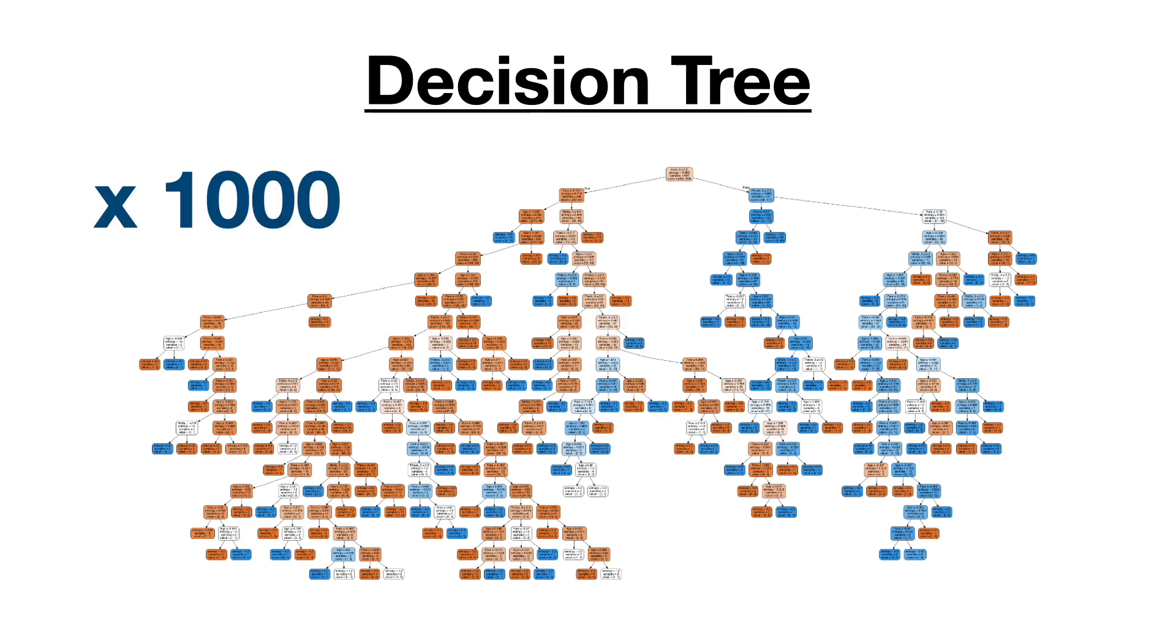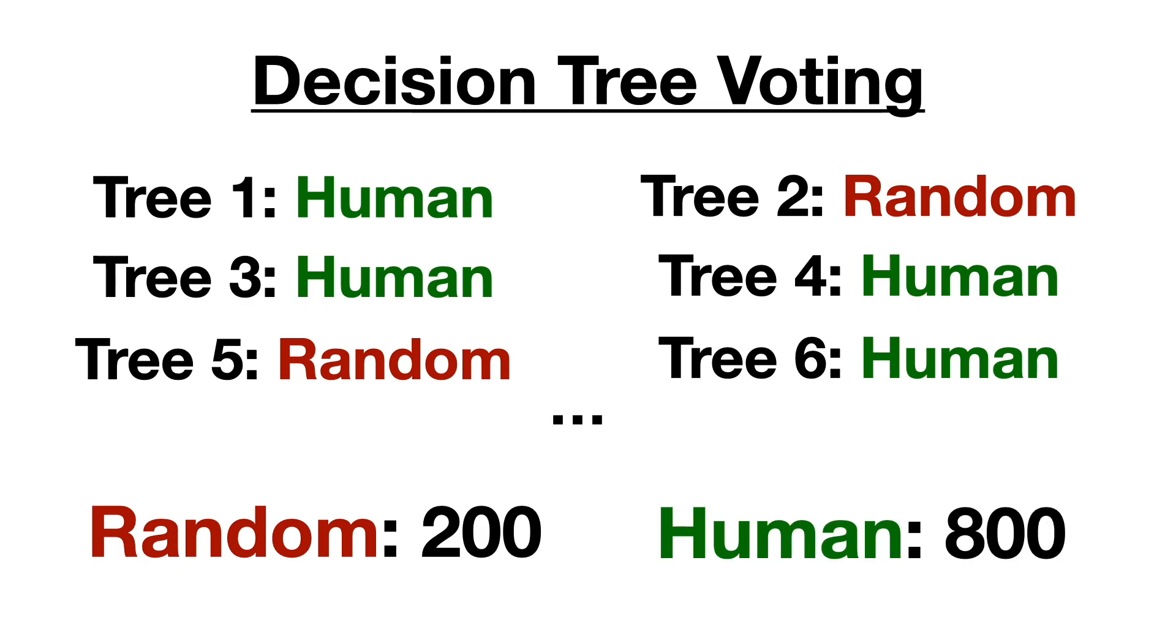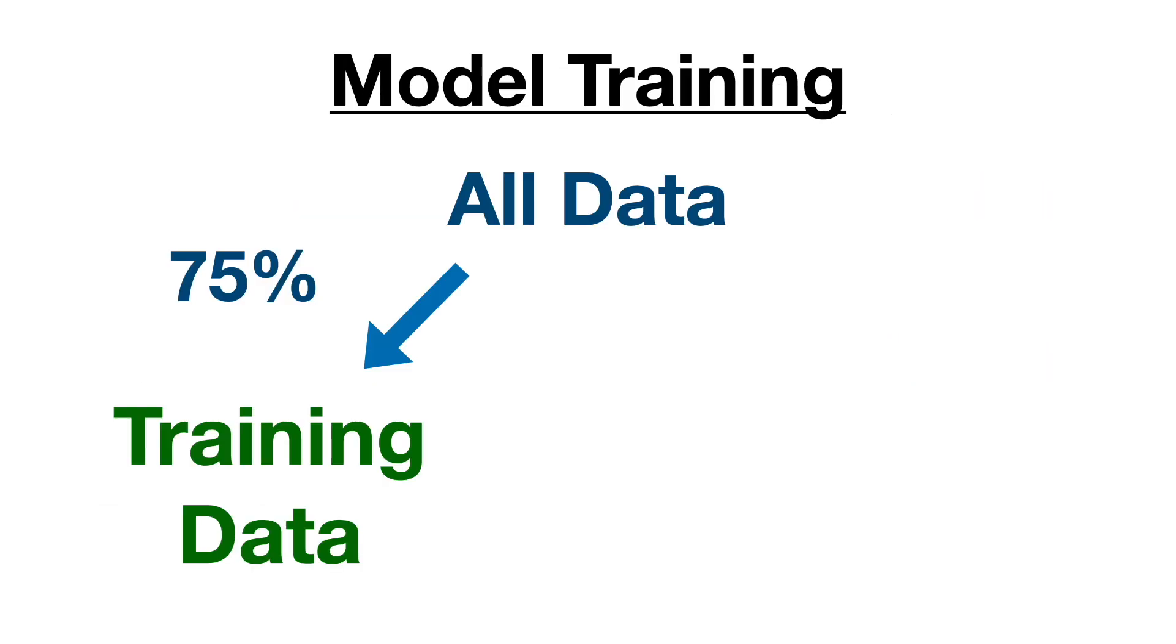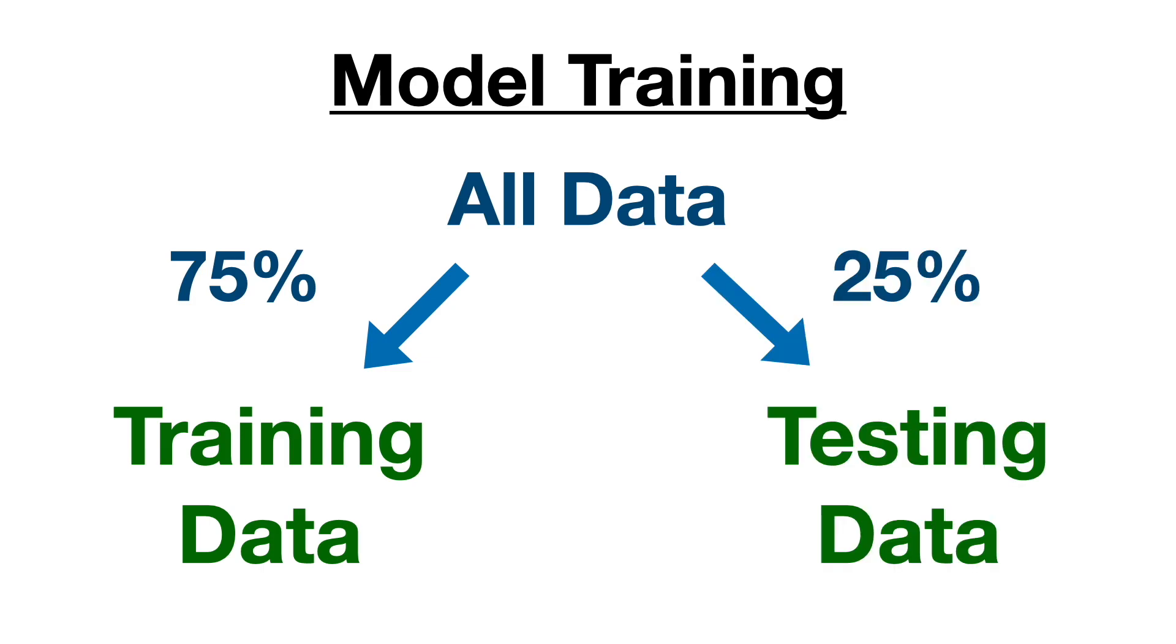I decided to set the number of decision trees in the random forest model to be a thousand. This means that a thousand different decision trees will come up with a prediction about a sequence of coin flips. If 200 of these decision trees predict that a sequence is truly random, while the other 800 predict that it was created by a human, the overall model will predict that the sequence was made by a person, since 80% of the decision trees landed on this answer. I used 75% of the data I collected to train the model, and I saved the remaining 25% of the data to test the model on coin flips that it's never seen before.